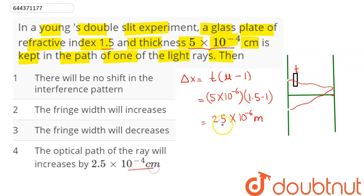0.5 into 5 becomes as 2.5 into 10 power minus 6 meter. So, we can see here, in centimeter, this can be written as 2.5 into 10 power minus 4 centimeter.